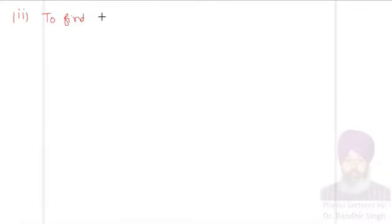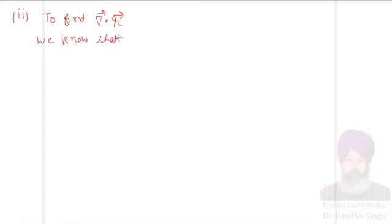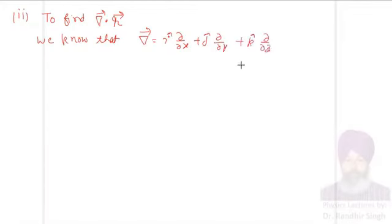We need to find del vector dot r vector. We know that del vector is i-cap ∂/∂x plus j-cap ∂/∂y plus k-cap ∂/∂z, and we know that r vector is x·i-cap plus y·j-cap plus z·k-cap.